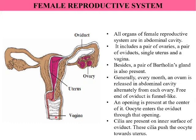Finally, we have the vagina. The vagina is a muscular canal that is lined with mucus and nerves. The vagina is the connection between the uterus, cervix, and the outside of the body. The cervix is the mouth of the uterus, and it is through the vagina that the uterus and the cervix are connected to the outside.